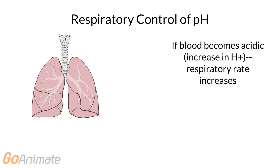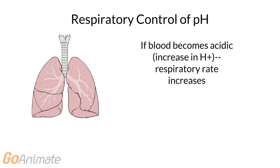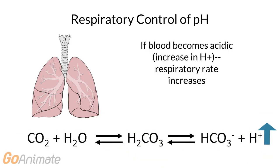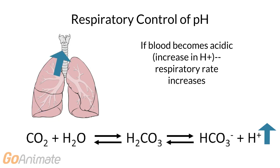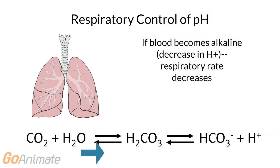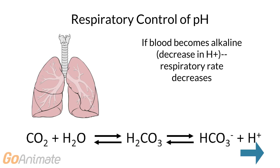In addition to buffer systems, the respiratory system also works to maintain pH. For example, if blood becomes too acidic, respiration rate increases in order to rid the body of carbon dioxide, and a subsequent decrease in hydrogen ions occurs. Likewise, if blood becomes too alkaline, respiration rate decreases in order to increase the hydrogen ion concentration. You could say that hydrogen ion concentration follows carbon dioxide concentration.